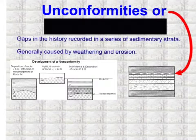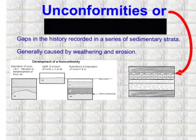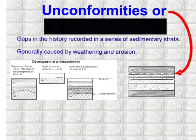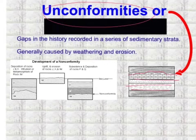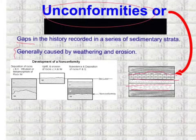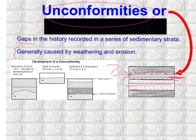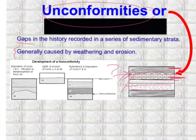Now, unconformities. Sometimes when you look at a sedimentary strata diagram, you'll find a squiggly line instead of a straight line. That squiggly line means you have an unconformity. Unconformities basically mean there is a gap in the history recorded in a series of sedimentary strata. Something happened there — generally weathering and erosion — but something is actually missing. We can't assume the two surrounding layers were laid down directly one after the other.